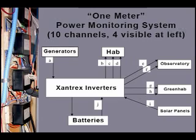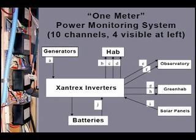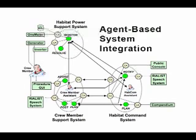In 2006, the Mars Society's MDRS Habitat received power from a diesel generator and a solar panel. An inverter charged the backup batteries and converted the power to AC. The 1-meter system logged volts and amps on 10 channels. Voice commanding allows access to historical data as well as setting alerts and sending voice notes to crewmates. The mobile agent system is running on six laptop computers. Five are on a lower deck table. The Habitat power support system processes all inquiries.